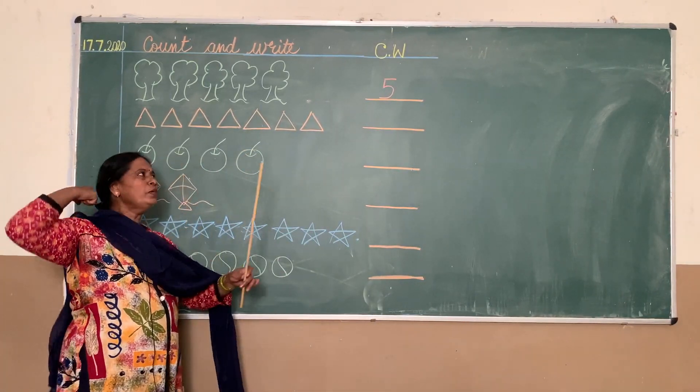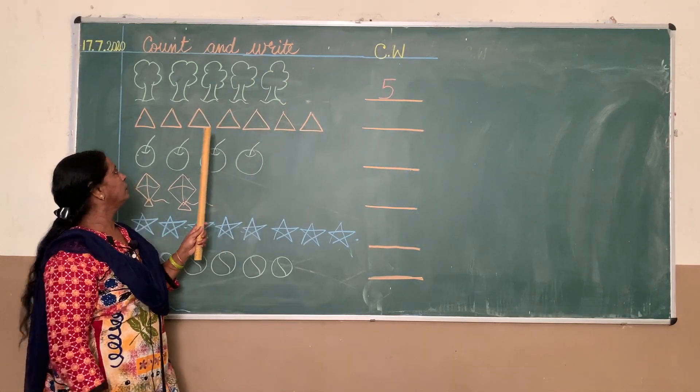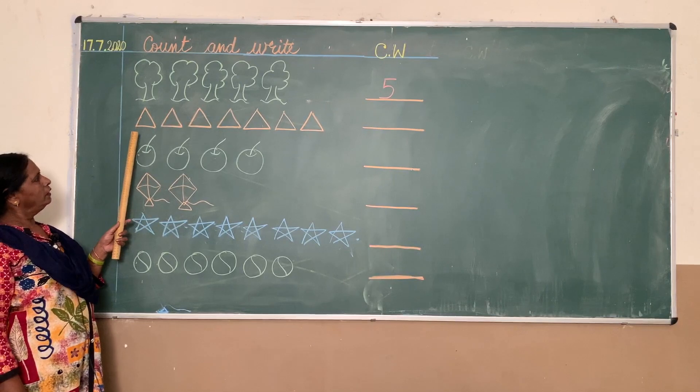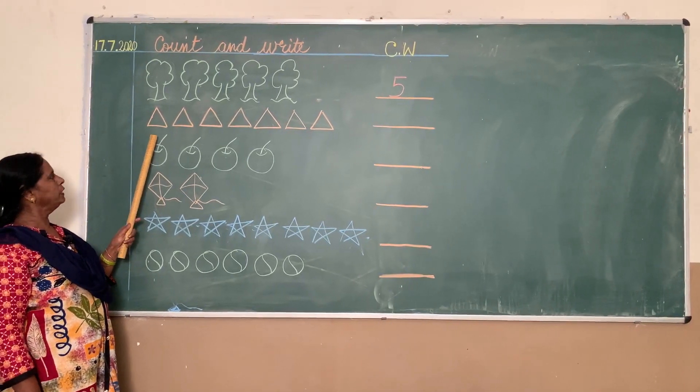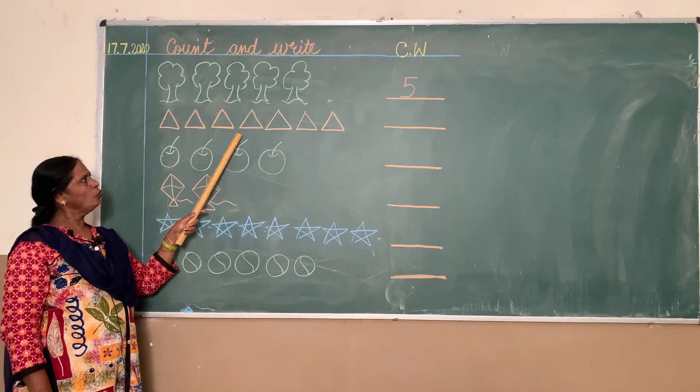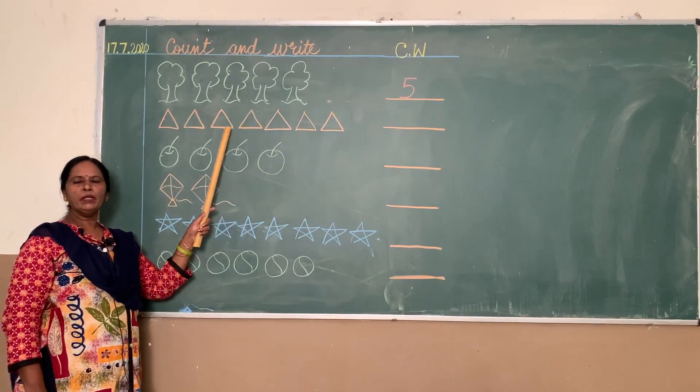Now what are these? These are triangles. Now let's start counting. Yes. One, two, three, four, five, six, seven. How many triangles did you count? There are seven triangles, so you write seven here on this line.